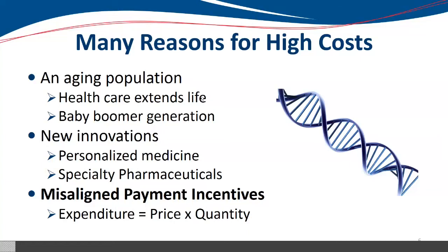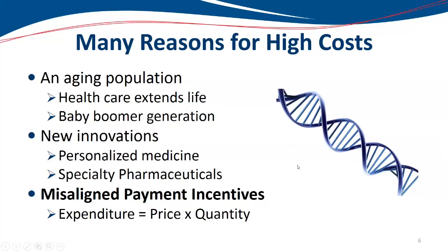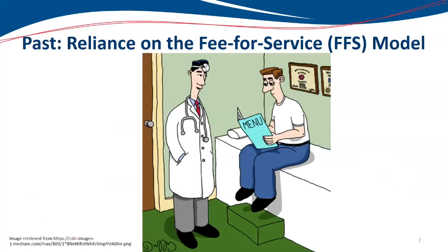A third part of the discussion is the misaligned payment incentives. In the past, expenditure was equal to price times quantity, and it was this issue of quantity — we had a system that was incentivizing quantity of care. If that quantity goes up, the expenditure goes up, regardless of whether or not the price was going up. So we have these misaligned payment incentives that were encouraging an increase in quantity.